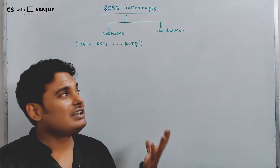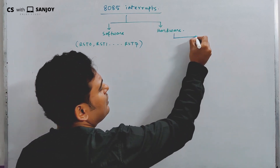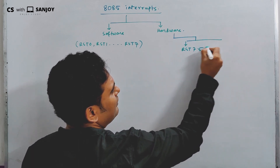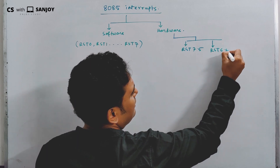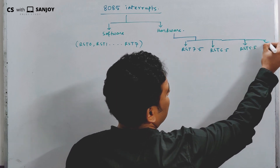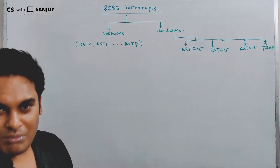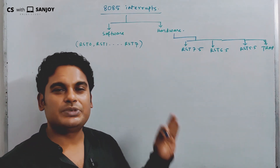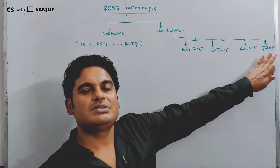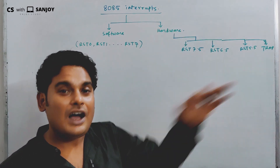There are three kinds of hardware interrupts: RST 7.5, RST 6.5, RST 5.5, and TRAP. TRAP is a non-maskable, highest priority interrupt. If the TRAP occurs, it has to be executed.